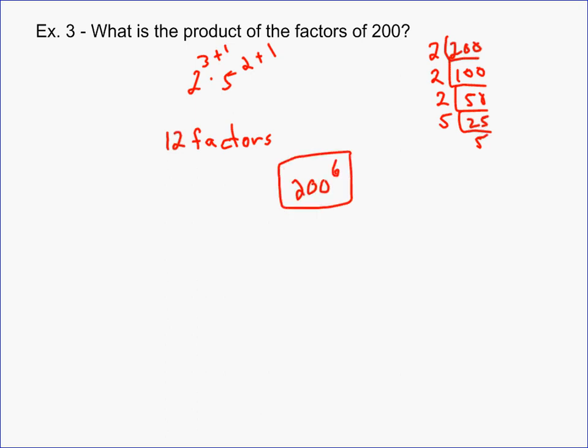So it really turns out to be a pretty easy problem once you get a hang of it. All you have to do is find the number of factors, cut it in half, and raise it to that number, to that half of the number of factors. Except when the number we're looking at is a perfect square, and that's when we have to deal with the odd number of factors like we did on example 2.